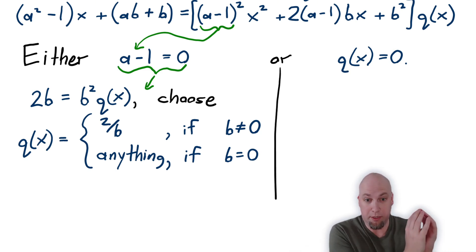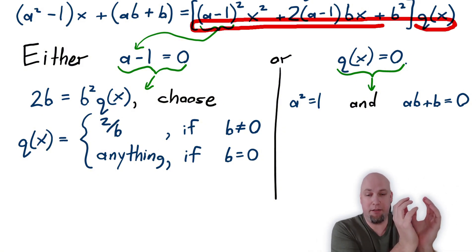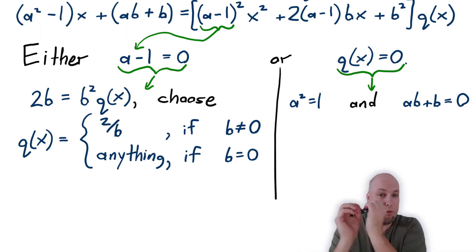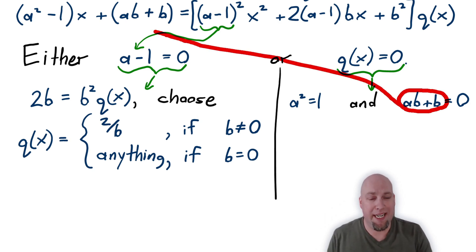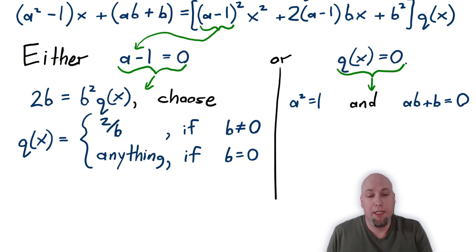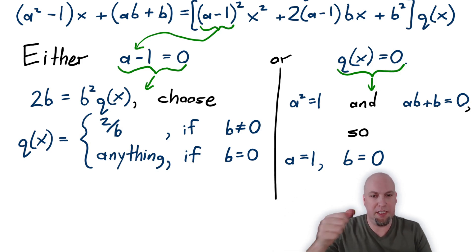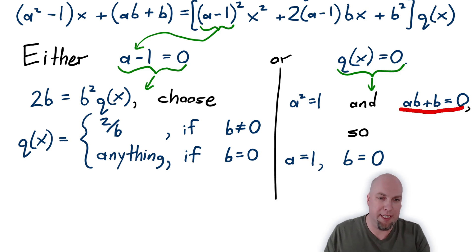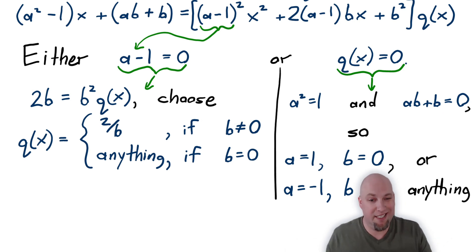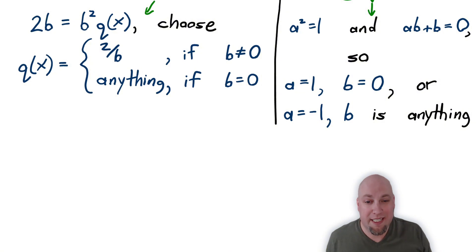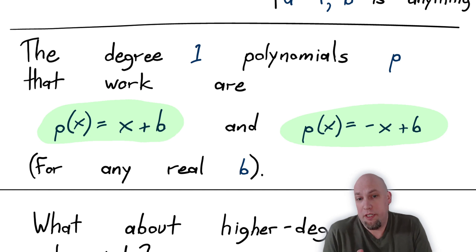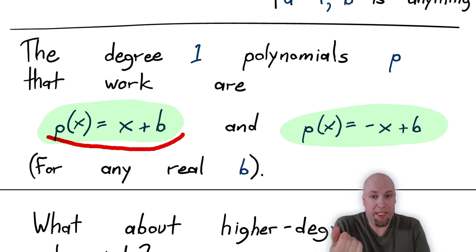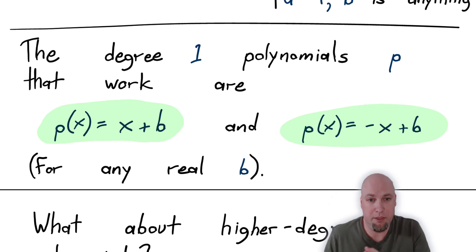In the other case, if q(x) equals zero, then everything on the right hand side is zero, so the left hand side must be zero as well. That means both coefficients on the left must equal zero: a squared minus one equals zero, and ab + b equals zero. Solving this system: a squared equals one gives a equals plus or minus one. If a equals plus one, the other equation forces b equals zero. If a equals minus one, b can be anything. So the linear solutions are x + b and negative x + b.